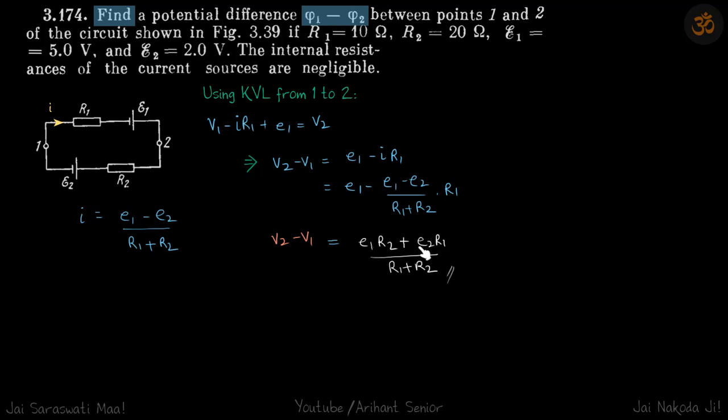It's a positive quantity and you can see also the sense of the battery, both the batteries, they are providing positive charge towards right, so V2 has to be at higher potential than V1, so V2 minus V1 has to be positive which is our answer.